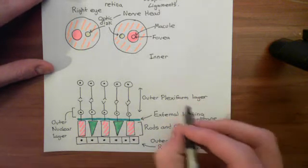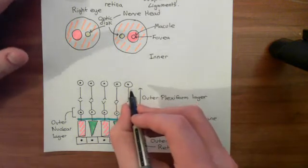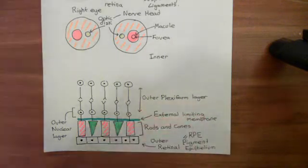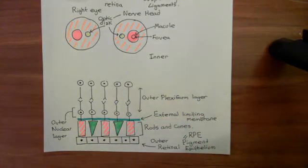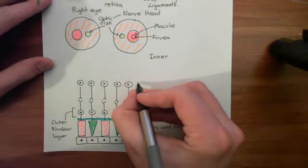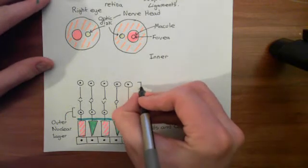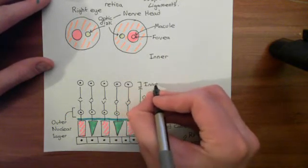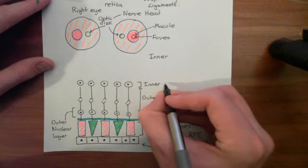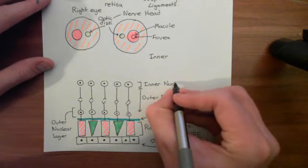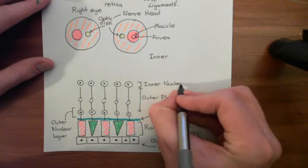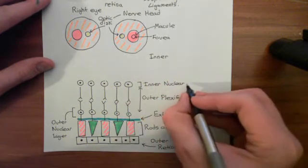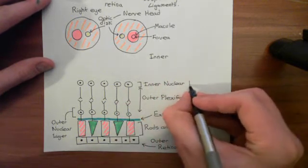Then we have another cell layer containing all the cell bodies of the bipolar neurons. This is known as the inner nuclear layer — so we've had the outer nuclear layer and now the inner nuclear layer, which is closer to the vitreous humor.